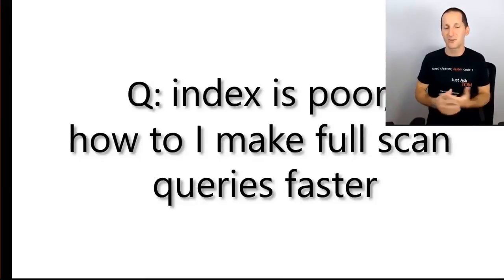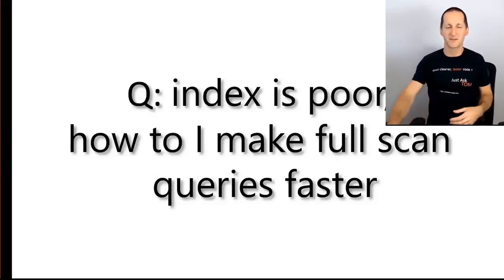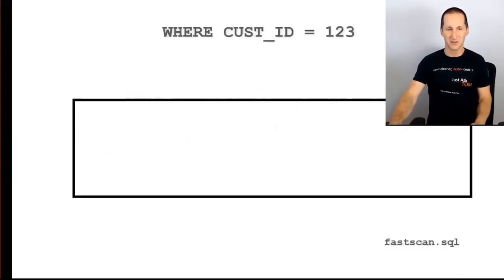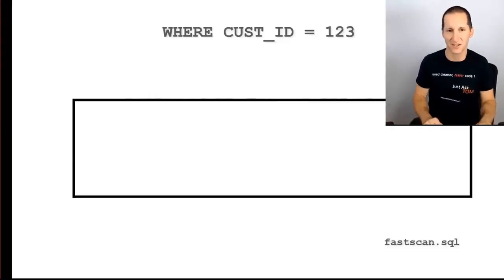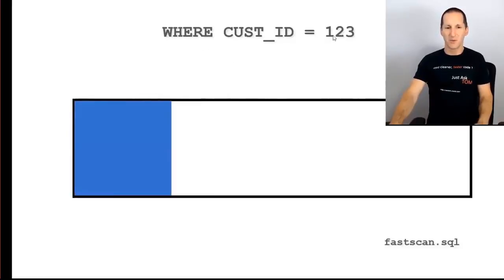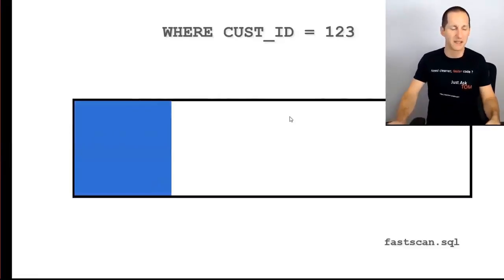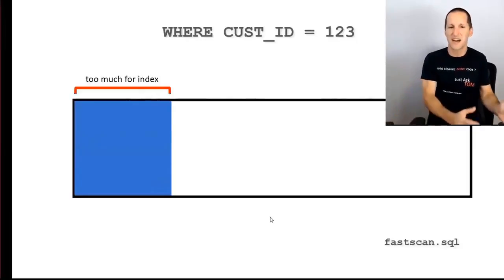There's also this middle-ground catch-22 where you can get stuck. Take a table of customer transactions — for a given customer there are lots and lots of rows. If I do WHERE customer = 123, let's say that gets about 20% of the blocks in the table that need to be accessed to get that customer's data.